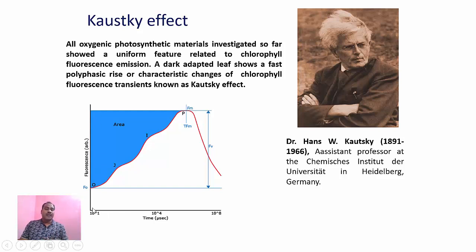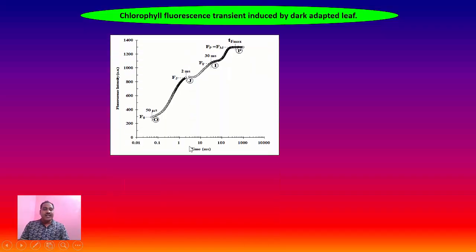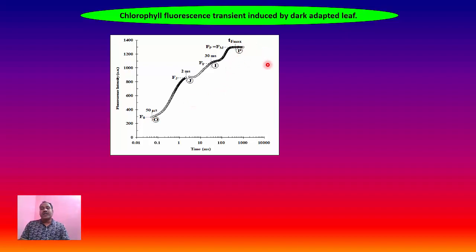The polyphasic rise shows steps labeled O, J, I, and P, which differ from plant to plant. This is a typical chlorophyll fluorescence transient induced in dark-adapted leaves. If we plot chlorophyll fluorescence intensity versus time, it shows a polyphasic rise from the minimum fluorescence O to the maximum fluorescence P. This O-J-I-P transient is directly related to and comparable with the electron transport system seen in the chloroplast.